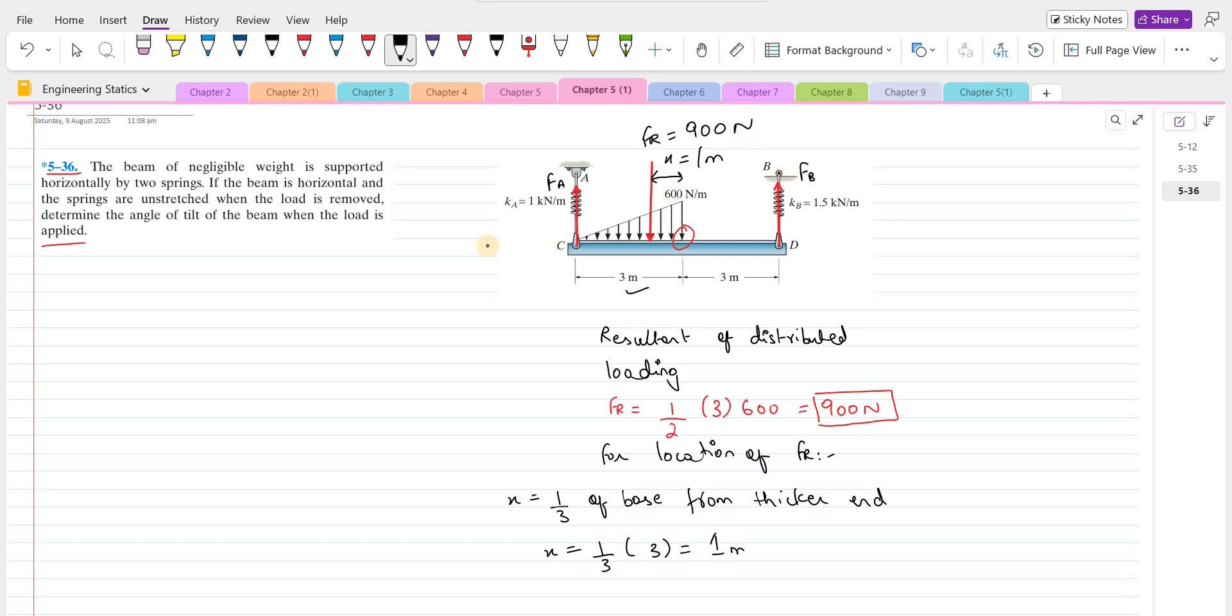So this is our free body diagram. Now we can apply our equations of equilibrium. So my first equation is summation of moments at point C equals to 0. I am considering counterclockwise direction as positive.